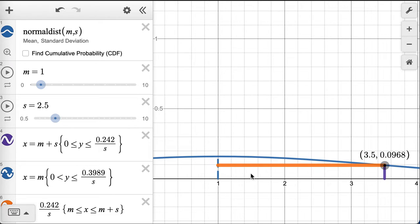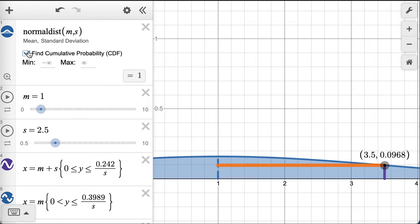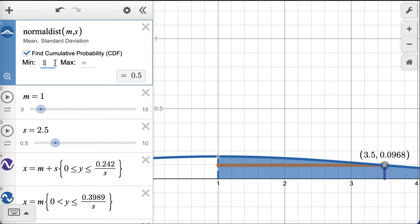But this area is still going to be 34%. In this case, it's running from the mean of 1 out to 3.5 because that's where I moved. I've got the mean sitting currently at 1. A standard deviation of 2.5.